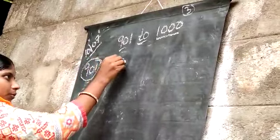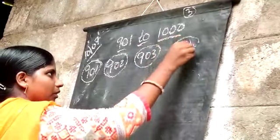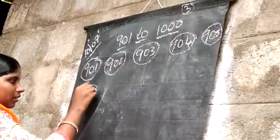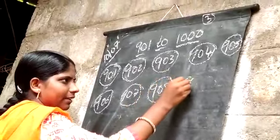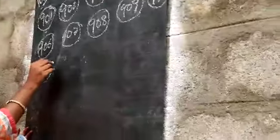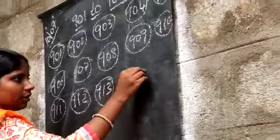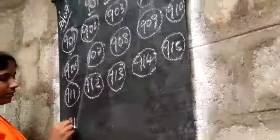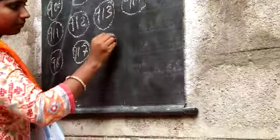901, 902, 903, 904, 905, 906, 907, 908, 909, 910, 911, 912, 913, 914, 915, 916, 917, 919.